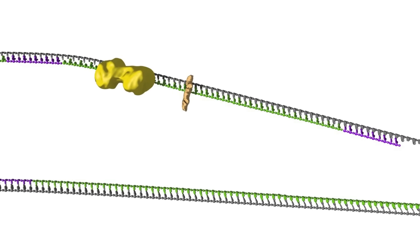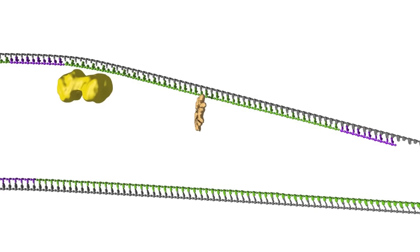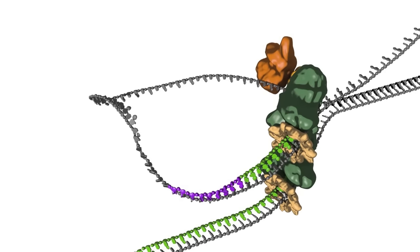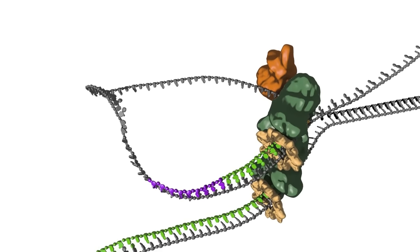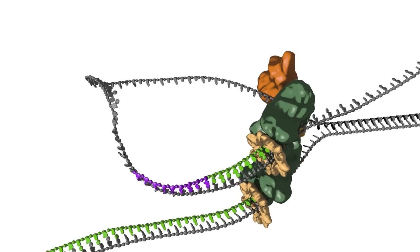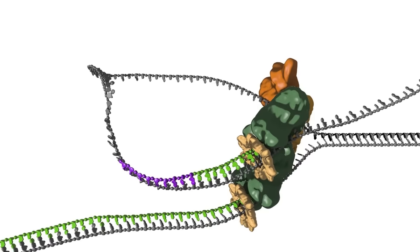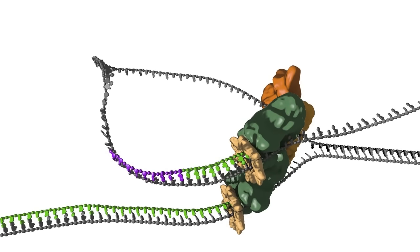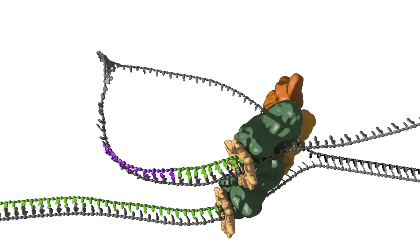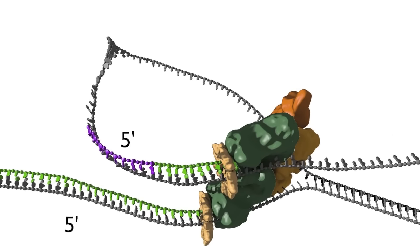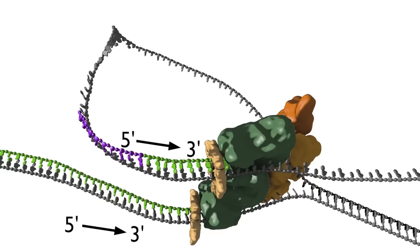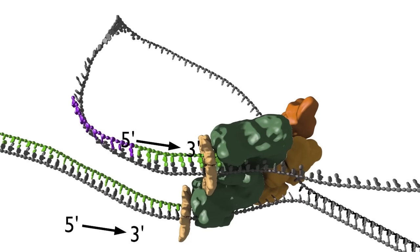Now the lagging strand has been elongated by one more Okazaki fragment. While this view of the replication fork is easiest to understand, in reality the leading and lagging polymerases are coupled and move in concert with the helicase. This coupling requires one DNA strand to be looped around so that the lagging polymerase can synthesize DNA in the five prime to three prime direction while moving with the fork. We explore this coupling in more detail in a separate animation.